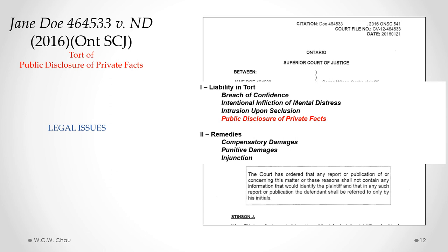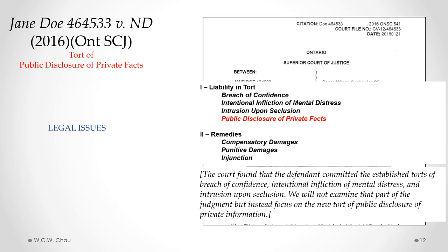The legal issues were whether the defendant had committed any one or more of four different torts: breach of confidence, intentional infliction of mental distress, intrusion upon seclusion, and the new tort of public disclosure of private facts. The other issue was what appropriate remedies would be — in terms of compensatory damages, punitive damages, and an injunction. The court did find that the defendant committed the established torts of breach of confidence, intentional infliction of mental distress, and intrusion upon seclusion, but what makes this case interesting is the new tort of public disclosure of private facts.